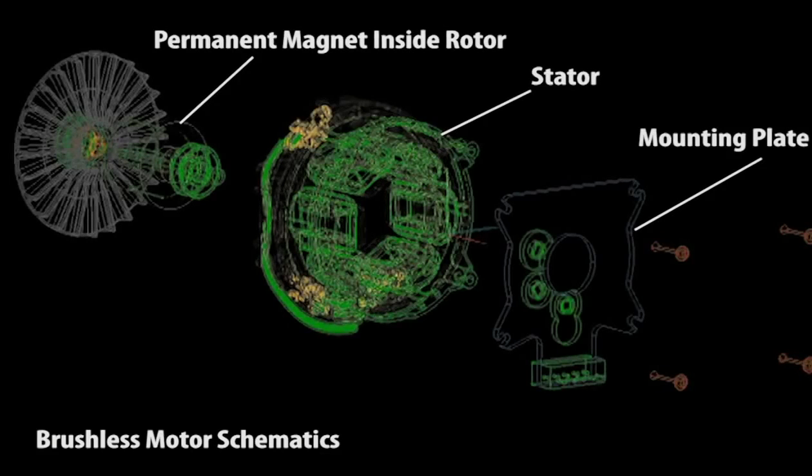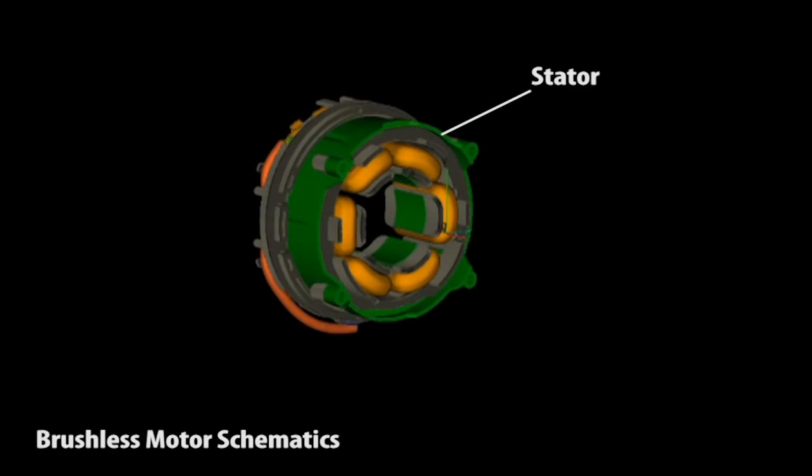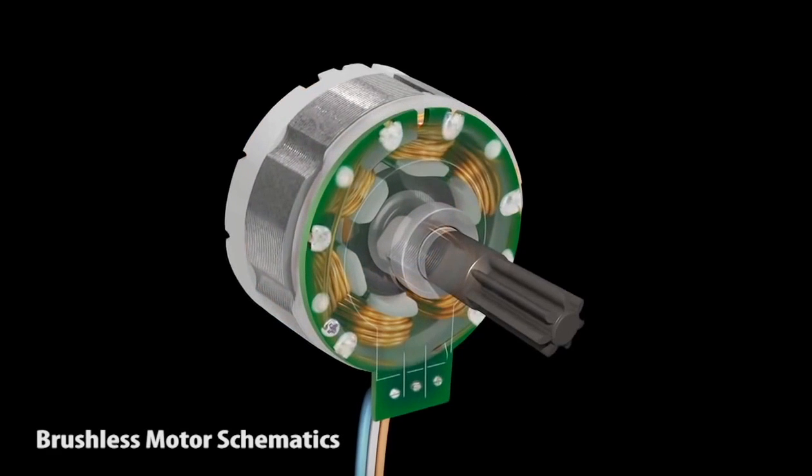Inside the LXT brushless motor, current is sent through the windings of the stator to power the rotation of the permanent magnetic rotor.